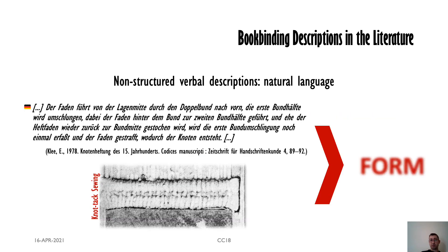The first kind of description relies on free text that follows the rules of natural language communication. In this particular case on the slide, we have the description of a particular kind of sewing structure that is referred to as knot-like sewing. The fact that the text is in German doesn't help if you don't speak German, but even in translation, the explanation of the spatial configuration of the thread around the sewing support — how the sewing is actually constructed, how the knot in the middle of the double sewing support is formed — is rather difficult to follow, because the communication of the structure is blurred and imprecise.